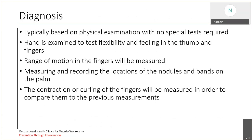In terms of the diagnosis, measurements are important in order to follow up on the progression of the disease. It's typically based on the physical examination with no special tests required. The hand is examined to test for flexibility and feeling in your thumbs and fingers. Range of motion is very important and will be measured in the fingers. Measuring and recording the location of the nodules and the bands on the palm are also very important, and the contraction and curling of the fingers will be measured to compare to previous measurements.